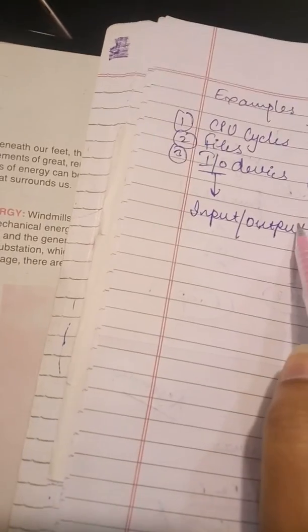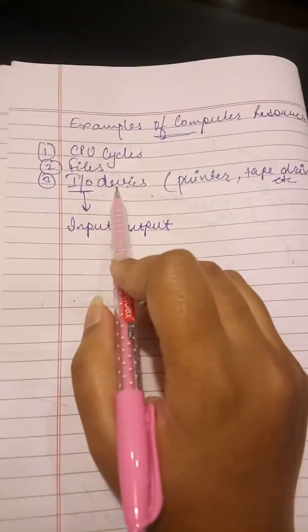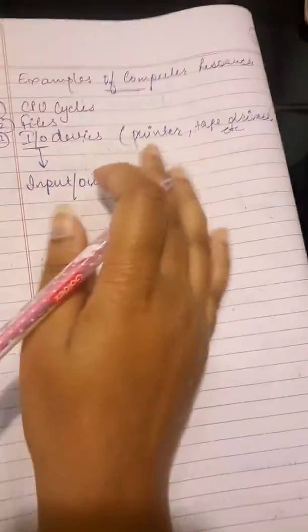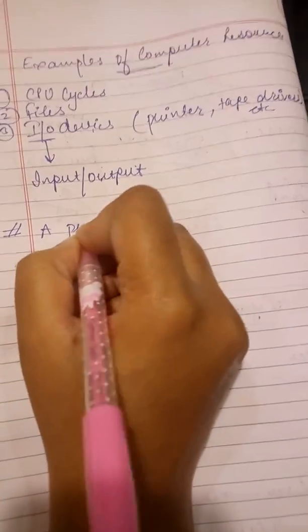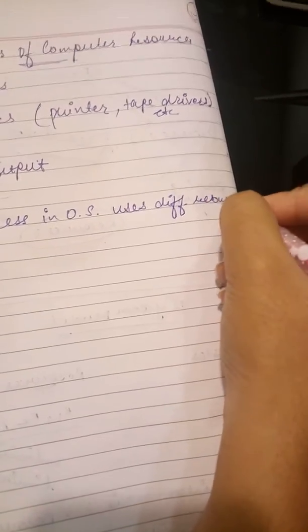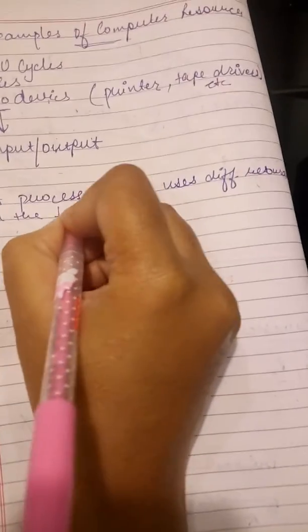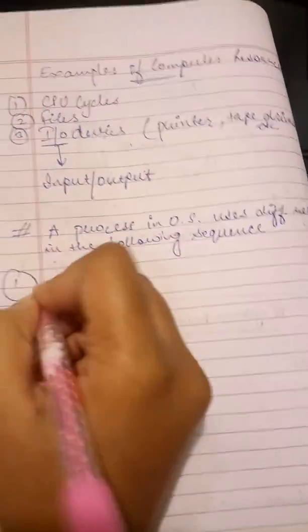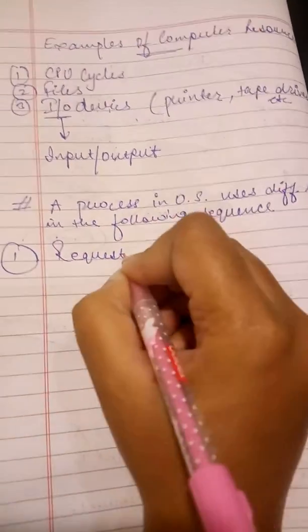Right guys, so now a process in operating system uses different resources in the following manner. So friends, what we are saying is that in an operating system you cannot use any resource whenever you wish. There is a proper procedure of how the process is gonna use the systems resources. There are basically three steps in which this process goes on. So let's write it down. A process in operating system uses different resources in the following sequence. The very first point is request a resource.